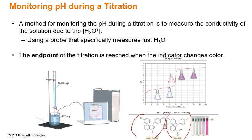We can also use a pH monitor. We can do this because there are special electrodes that we add into our solution where the conductivity changes based on the H3O+ concentration, and this allows us to tell the pH at any particular time. Using these probes is how we generally draw the titration curves of our solutions.